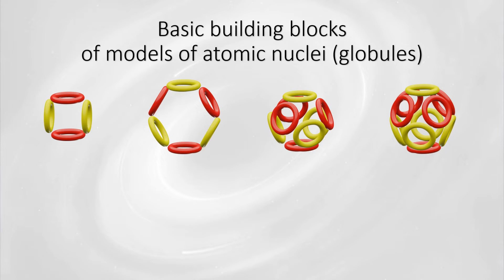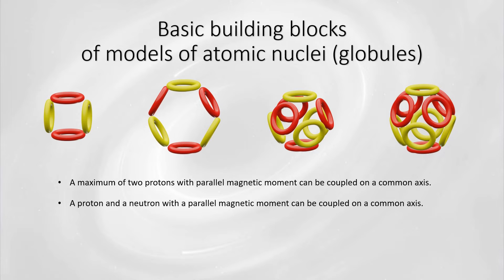According to the proposed model of the ring theory, the atomic nucleus can be constructed from ring-shaped protons and neutrons using the following rules. At most, two protons with parallel magnetic moments can be connected on a common axis. A proton and a neutron with parallel magnetic moments can be connected on a common axis. Two protons with different axes can be connected through a neutron. One or two neutrons can be inserted between two parallel protons. It turns out that by combining these four basic rules, it is possible to create highly variable structures for the nuclei of individual elements known from the periodic table.